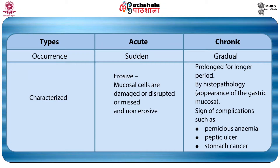Let us see the different types of gastritis. There are mainly two types: acute and chronic. Acute gastritis is severe, erosive, and occurs suddenly, lasting for a short time. The mucosal cells are damaged or cells may be missed. Chronic gastritis may occur gradually, progress slowly, but is prolonged for a longer period of time. Gastritis may be a sign when the person is affected by pernicious anemia, peptic ulcer, or stomach cancer.